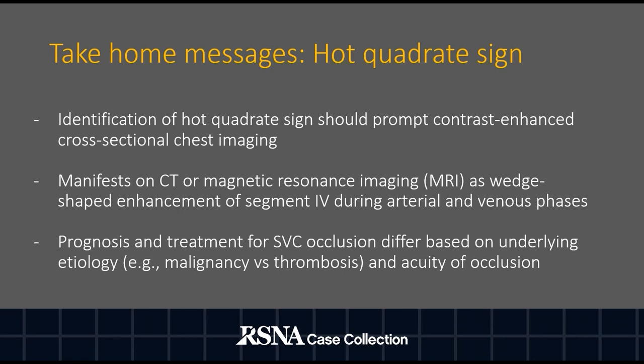Identification of the hot quadrate sign should prompt cross-sectional imaging of the chest. The hot quadrate sign manifests on contrast-enhanced CT or MRI of the abdomen as a characteristic focal wedge-shaped enhancement of segment four during the arterial and venous phases. The prognosis and treatment guidelines for superior vena cava occlusion differ based on the underlying etiology and the acuity of the occlusion.